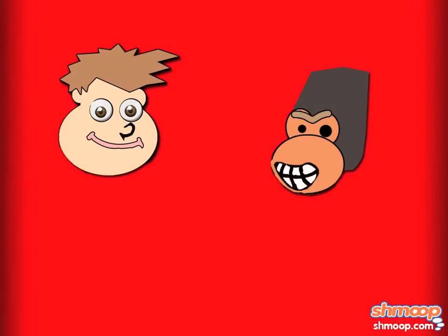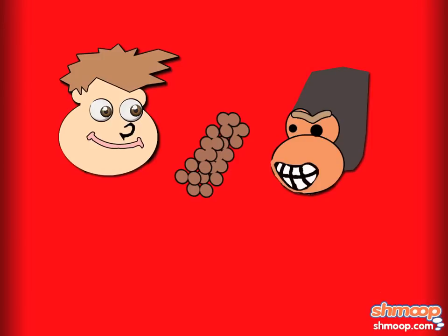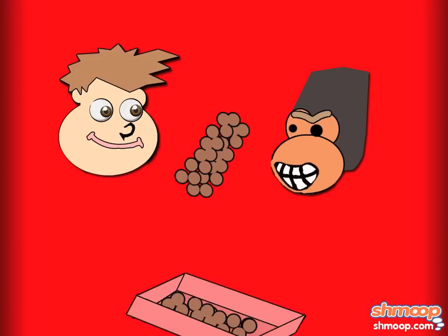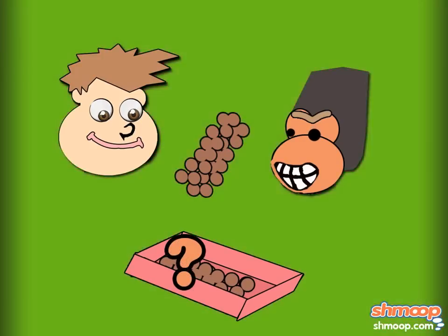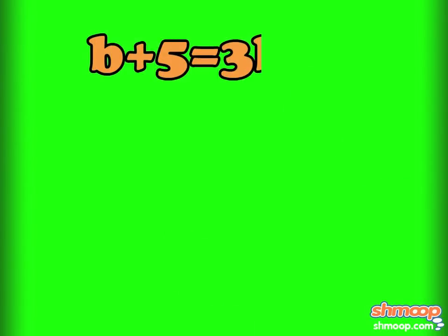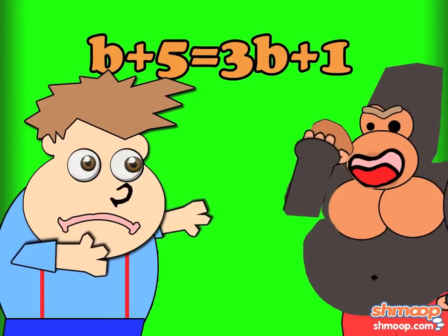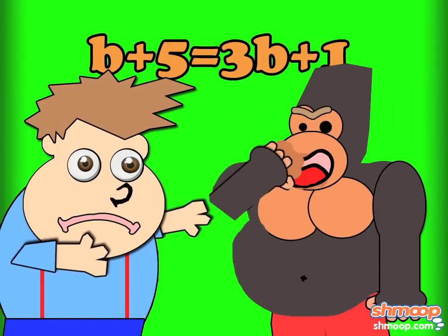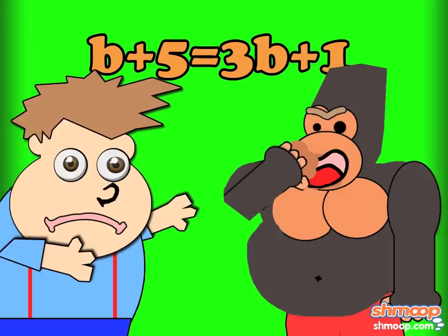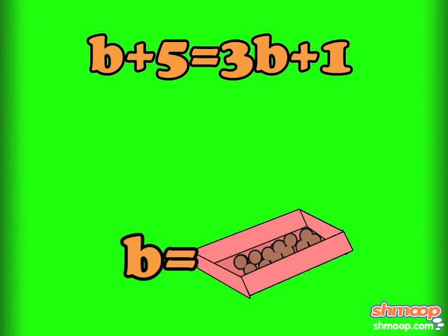If both boys are given the same total number of chocolates, how many chocolates are in each box? We start by writing it as an equation: b plus five equals three b plus one. That describes the relationship of Augustus and Gargantuous' distribution of chocolates. Here, b is a box of chocolates.